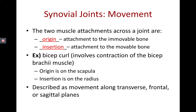Terms to introduce are origin and insertion. Origin is the attachment to the immovable bone; insertion is the attachment to the movable bone. For a bicep curl, the origin is on the scapula and the insertion is on the radius for the bicep brachii. The scapula remains relatively immovable, whereas the radius — in the forearm — does the most movement. We'll add to these definitions in chapters 9 and 10.